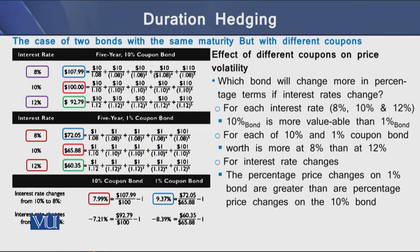Next we have another case of 2 bonds with the same maturity but different components. On the left side we have 3 panels: the upper panel is about a 10% coupon bond having 5-year maturity, the middle panel is on a 1% coupon bond having 5-year maturity, and the last panel is a comparison of the 10% coupon bond and the 1% coupon bond with interest rate changes from 10% to 8% and 10% to 12%.